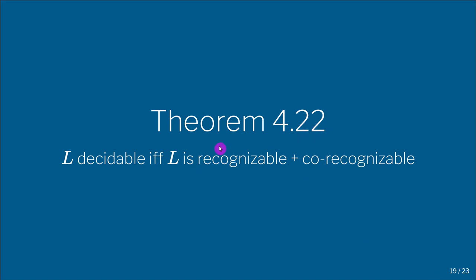Theorem 4.22 is as follows. We want to say that a language is decidable if and only if it is recognizable and co-recognizable. This is a theorem that looks at first glance quite simple, but if you go through the proof in more detailed fashion you will note that it is not trivial at all.